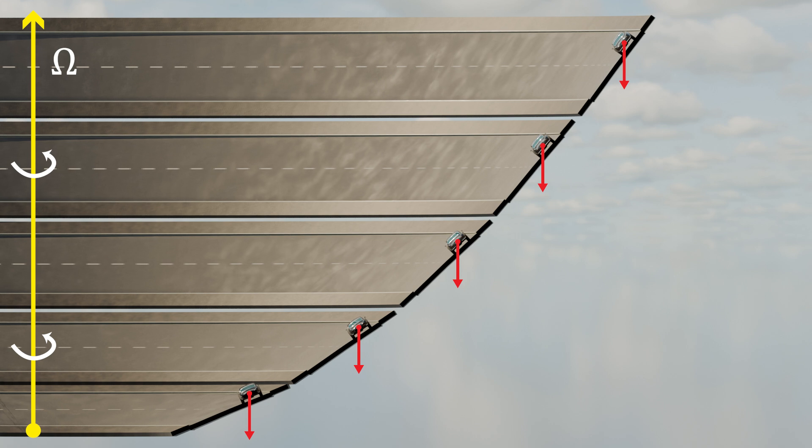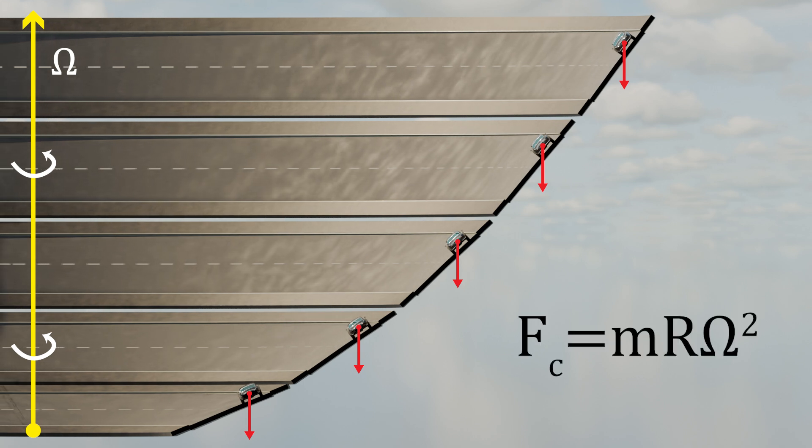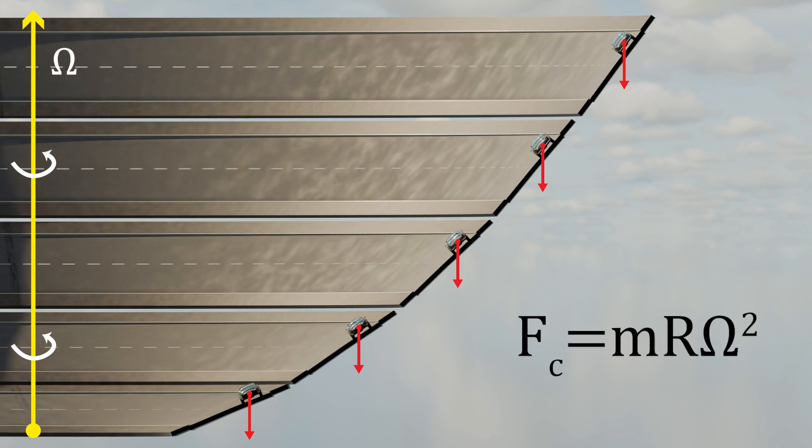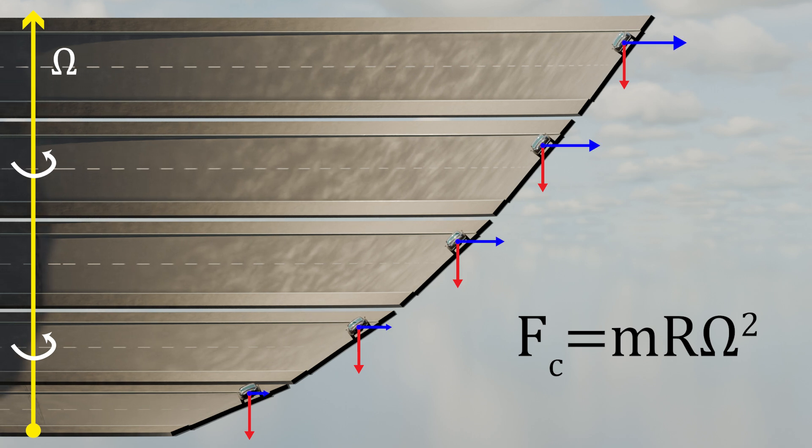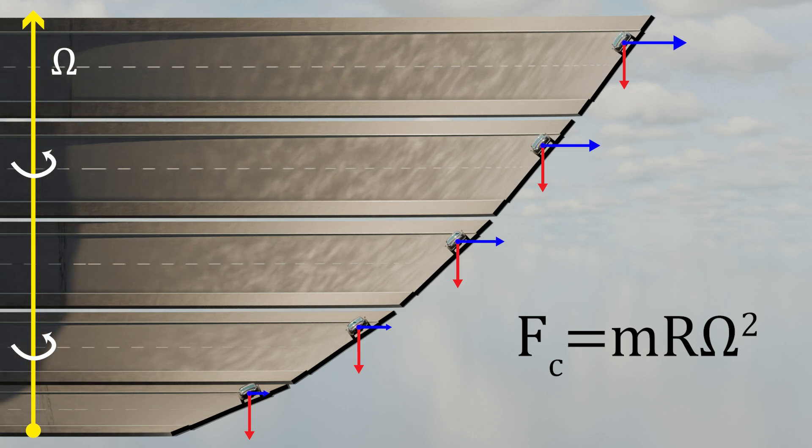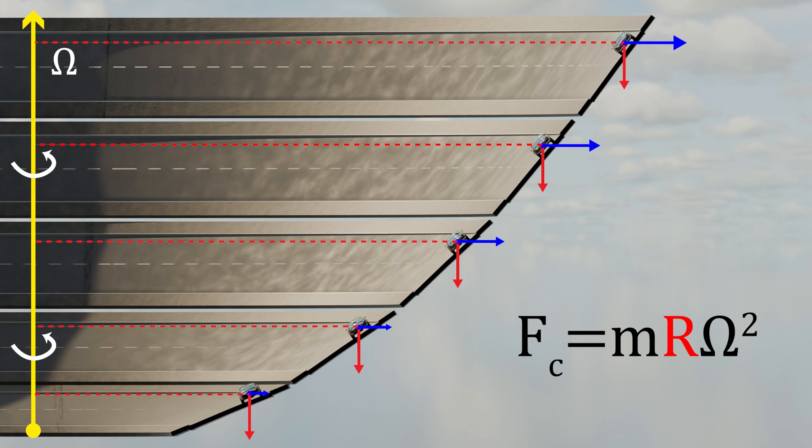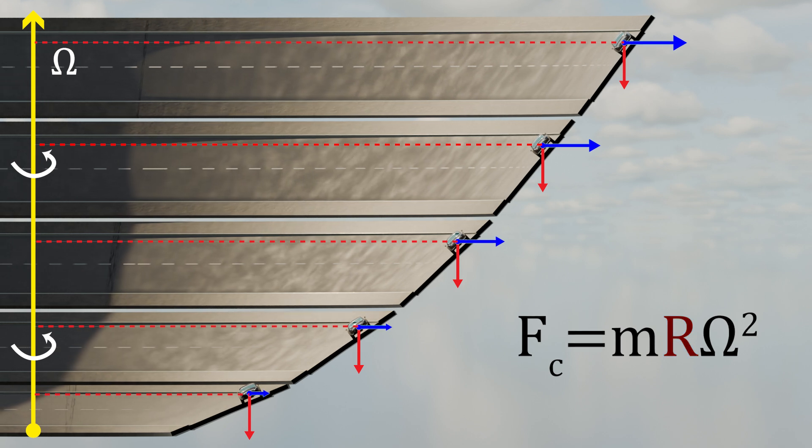By using the centrifugal force formula, MR omega squared, we can calculate the centrifugal force. With it, we can see that as the radius of the cars increase, so does the centrifugation.